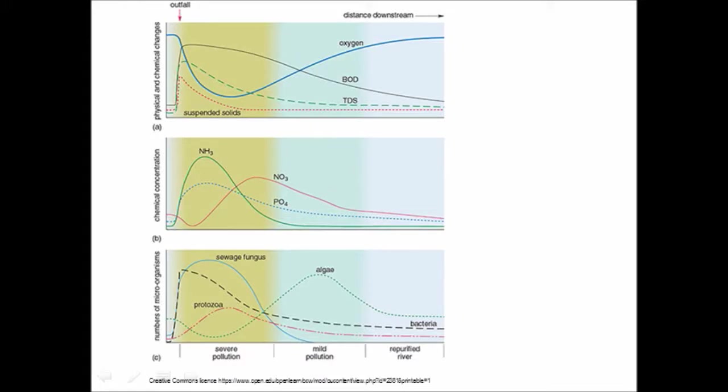This is a diagram from an Open University course and it just shows how, as you go along a length of river from left to right, pollution levels can actually act. So the top graph is just showing the levels of suspended solids and imagining that there's a sewage outfall where the red arrow is and suspended solids, untreated sewage entering the stream here. And you can see the red dotted line shows that the amount of suspended matter increases.